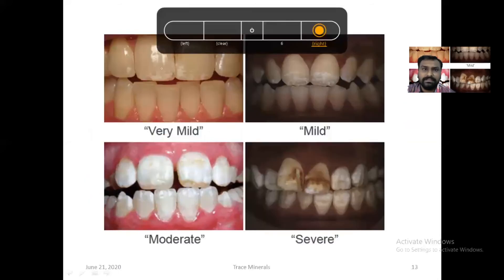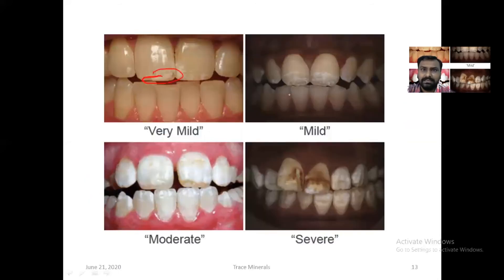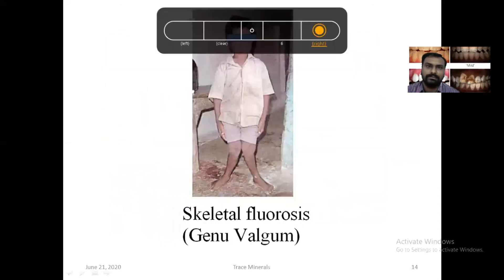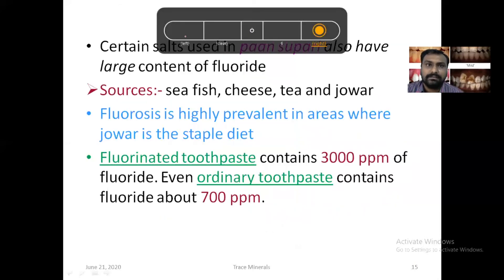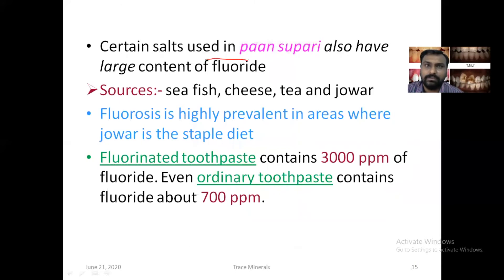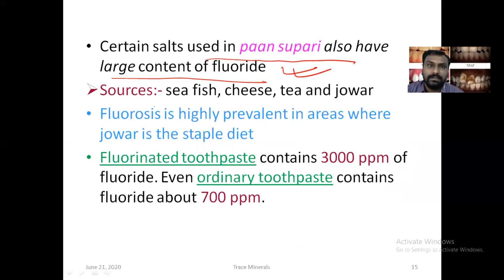You can see here a mild variety of dental fluorosis — discoloration of the teeth. And if the fluoride level is more, it will lead to severe dental fluorosis. This picture shows skeletal fluorosis — genu valgum — where skeletal deformity is seen. Certain salts used in pan-supari also contain large amounts of fluoride and can lead to fluorosis.